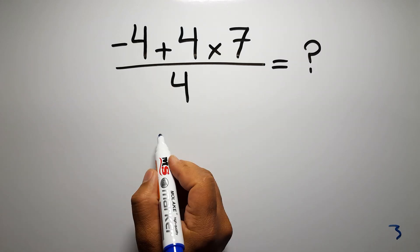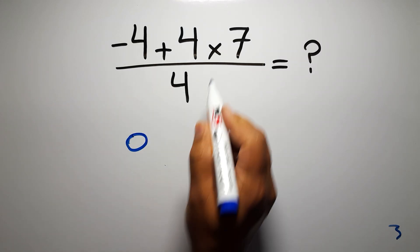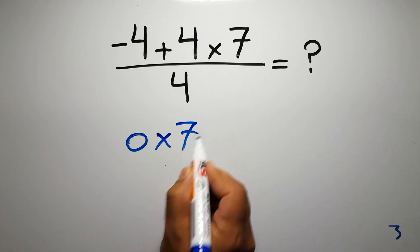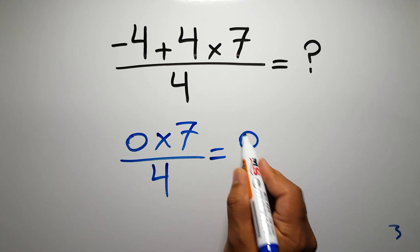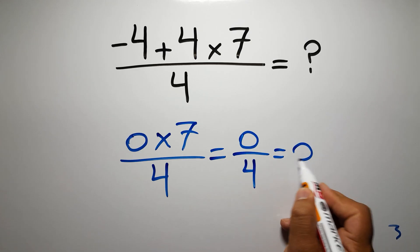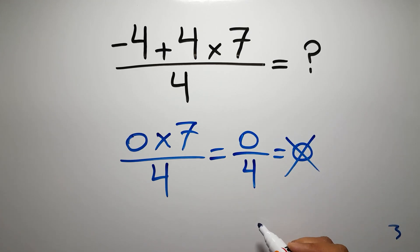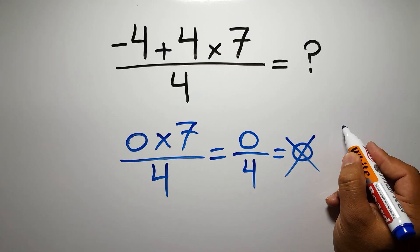Negative 4 plus 4 gives us 0, and 0 times 7 over 4. 0 times 7 is just 0, and 0 over 4 gives us 0. But this answer is not correct because according to the order of operations...